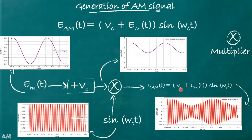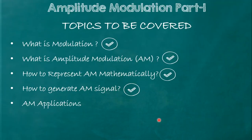By multiplying [Vc + em(t)] with sin(ωc·t), you can generate the AM wave whose shape will look like as shown in the figure.